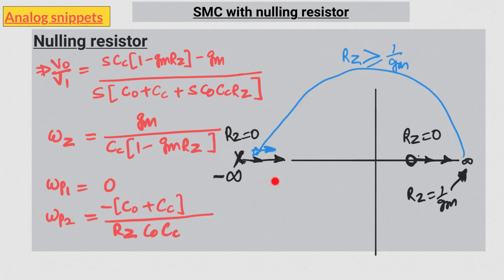In the initial phase of this movement, the zero is at a higher frequency compared to the new pole. But as we keep increasing RZ, the zero takes over the pole.